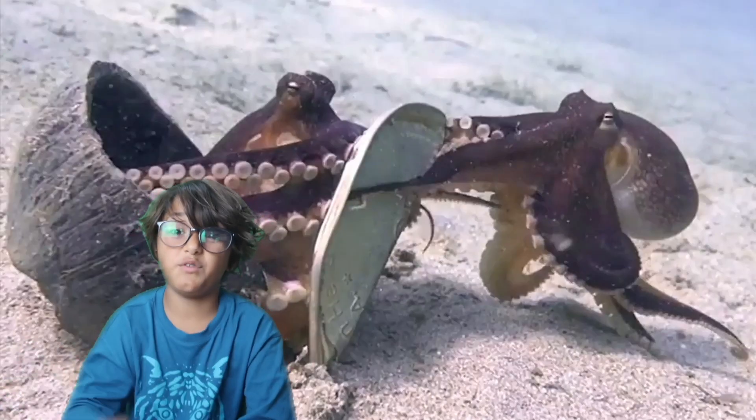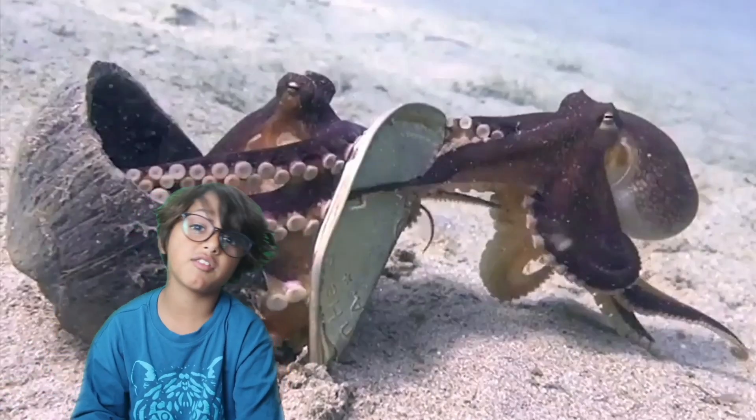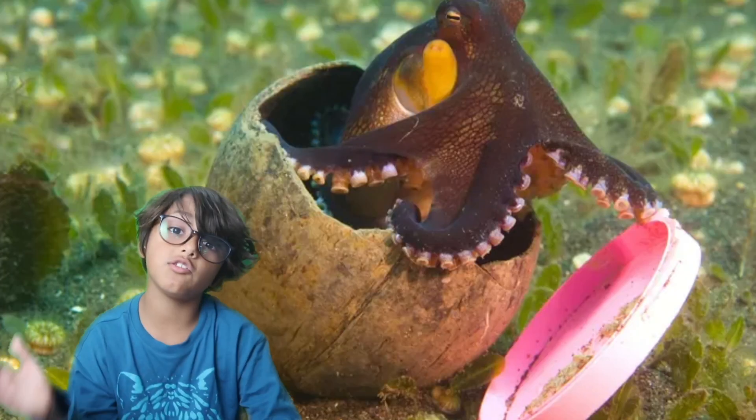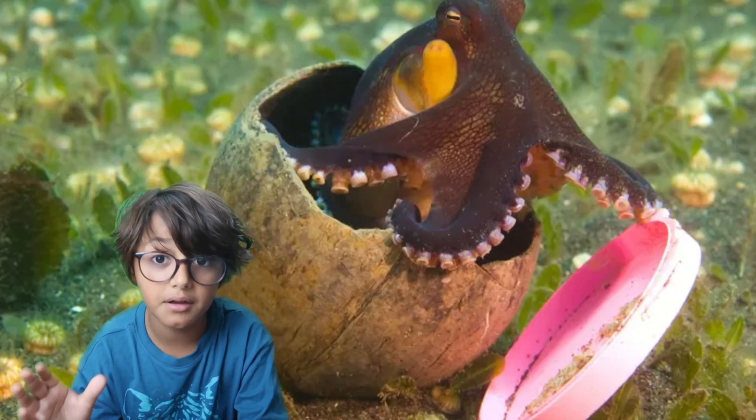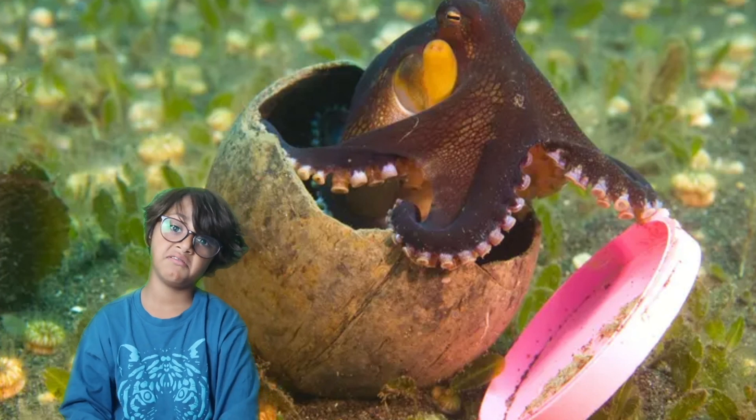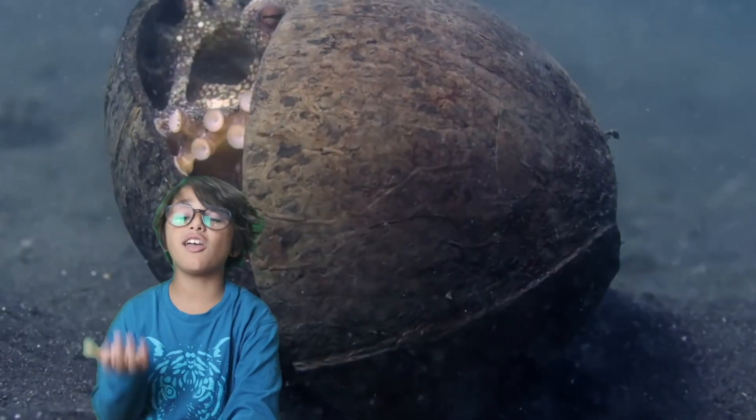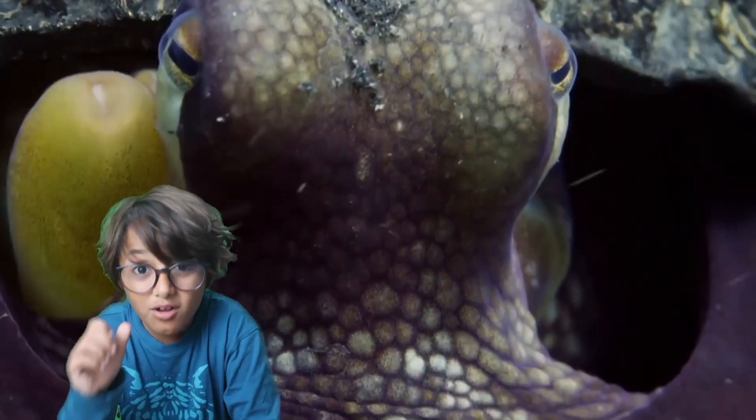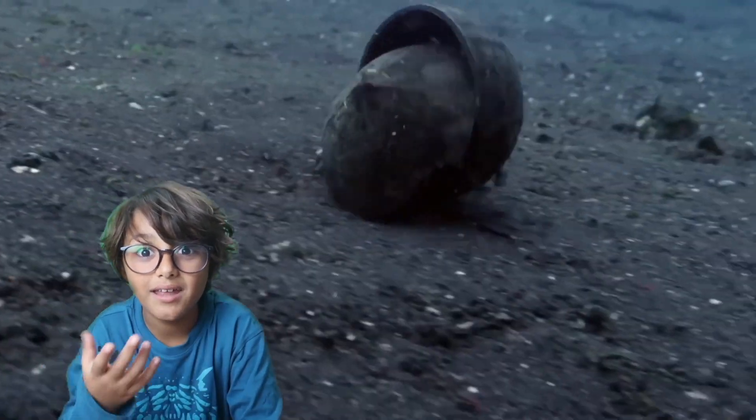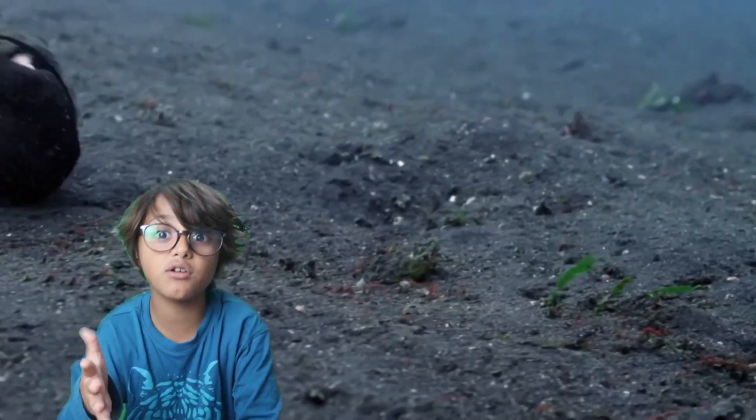They use anything they can find. Sometimes even bottle caps that they find in the ocean which just shows how bad pollution is now. The most impressive video was made in Indonesia in 2009 of an octopus making a den shield out of coconut shells.